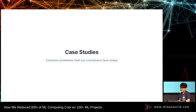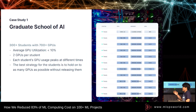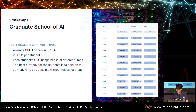Let's start with some case studies. Case study one: Graduate School of AI. 300 students share more than 700 GPUs. The huge problem was that average GPU utilization is less than 10%. There is one root cause — there are not enough GPUs for all students' use, so each student grabs as many GPUs as possible and they do not release them even if they don't need them. So all GPUs are always allocated, but not actually used.